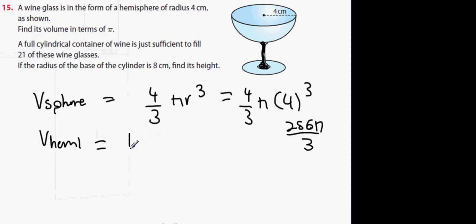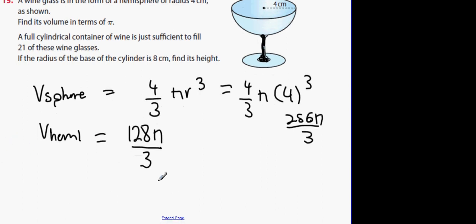Okay that's the volume of the hemisphere. Now a full cylindrical container of wine is just sufficient to fill 21 of these glasses. If the radius of the base of the cylinder is 8, find its height. So once again if I draw a cylinder, and the cylinder has a radius of 8 and a height of, we don't know the height, we want to find the height.